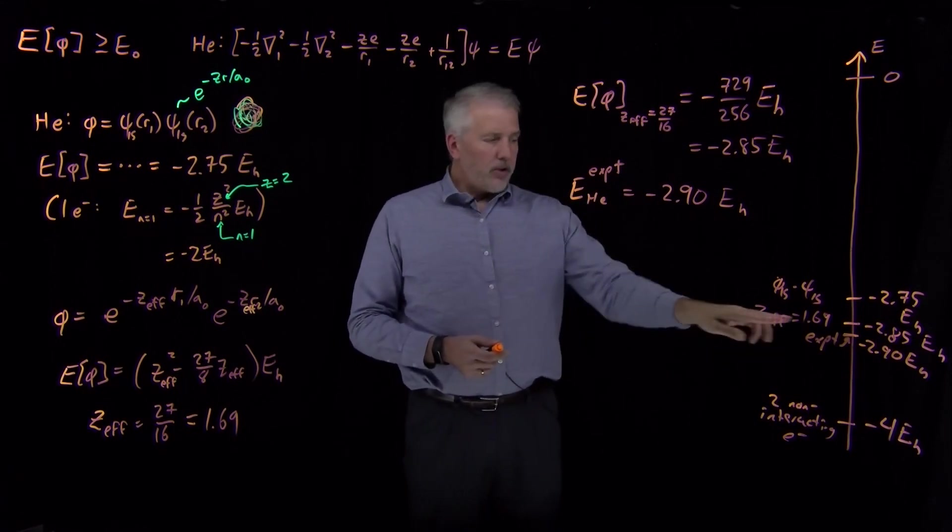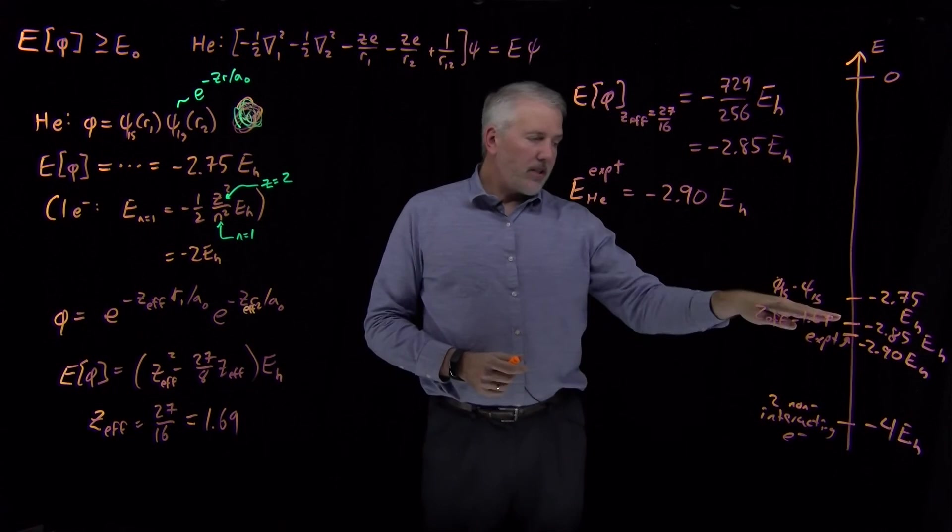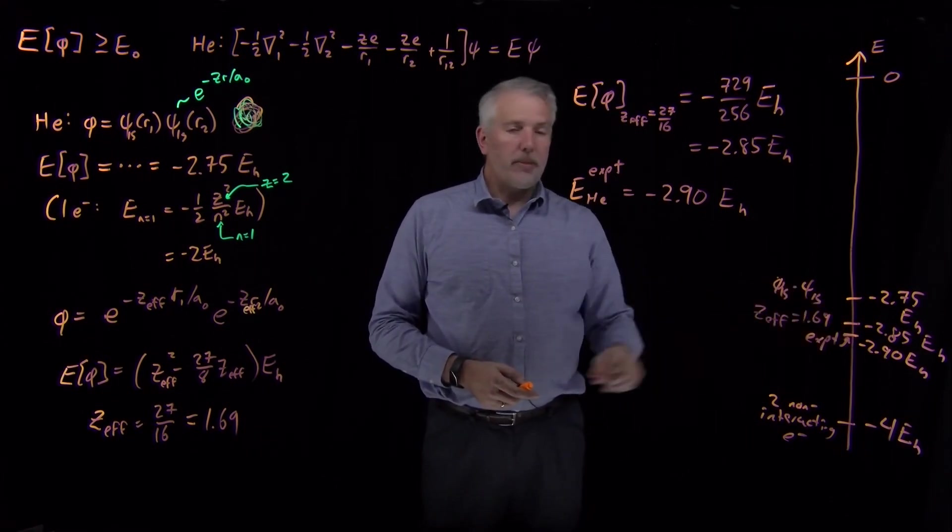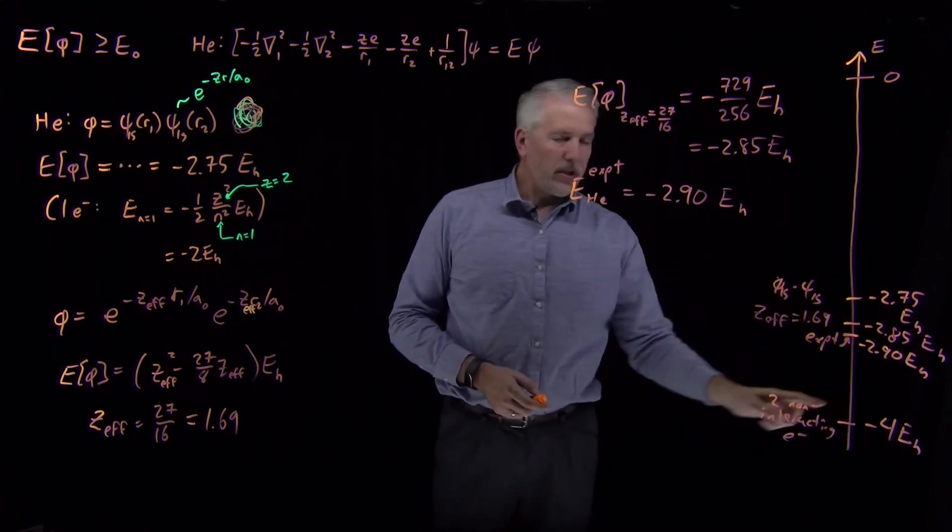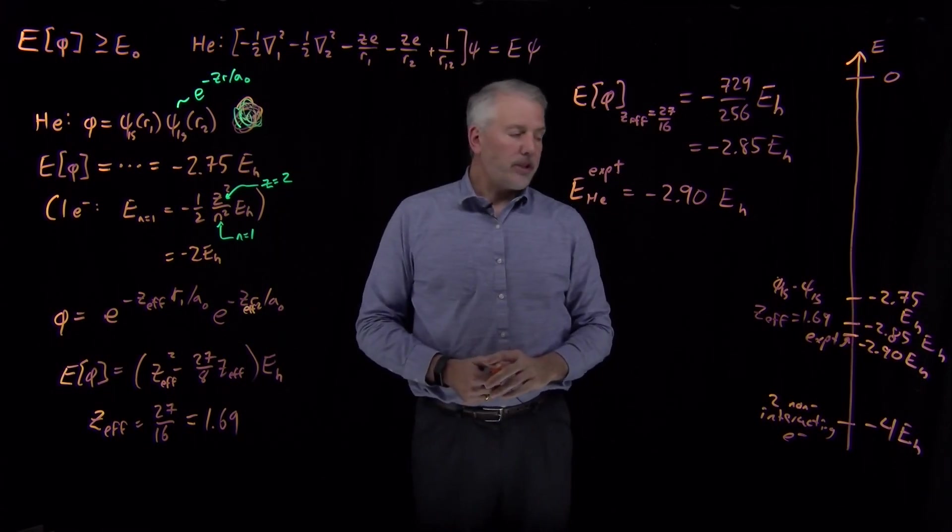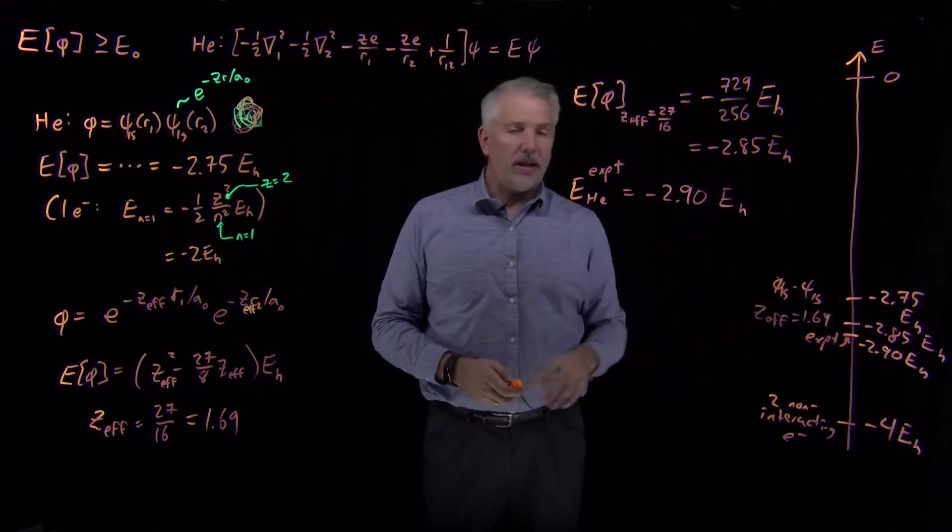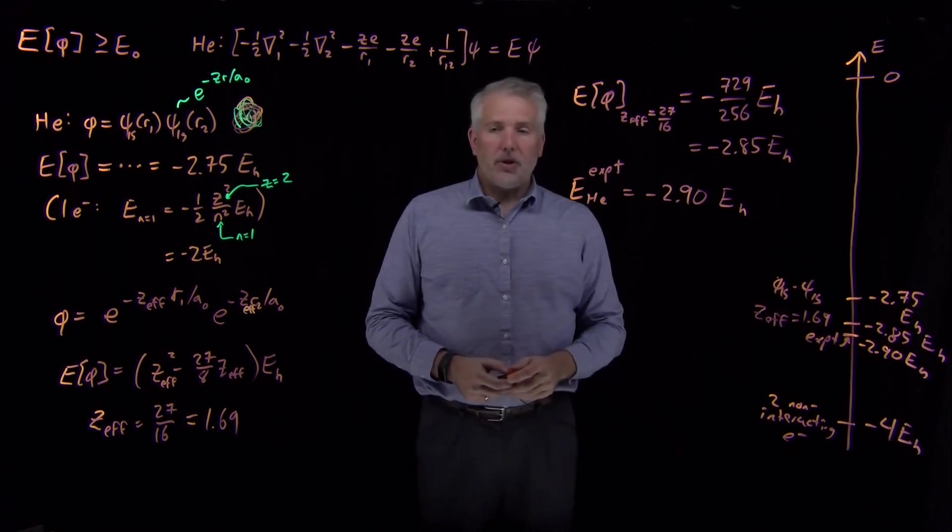So again, notice several things. As claimed by the variational theorem, the best I can do with a trial wave function that isn't quite right is still above the experimental energy. I can't get any better than the variational energy. This number is only lower than the variational energy because I completely ignored part of the Schrödinger equation just to get a ballpark estimate. But if I actually use the correct Hamiltonian, I can't do any better than the experimental energy.